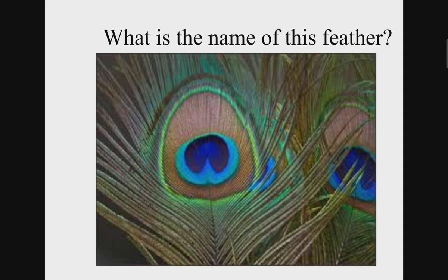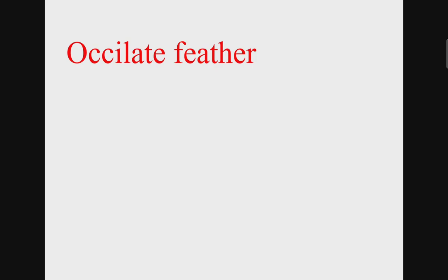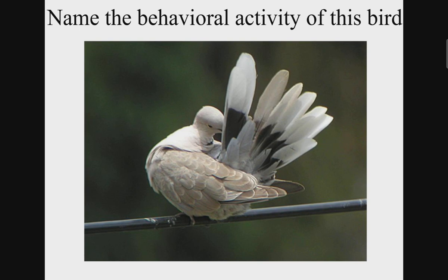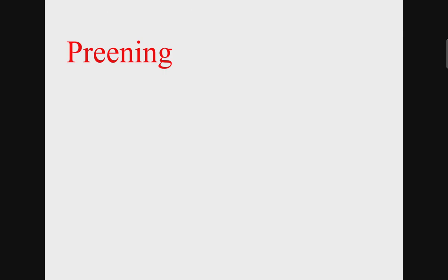What is the name of this feather? It is oscillate feather. What is the name of this animal? This animal is starfish. Name the behavioral activity of this bird. The activity is preening.